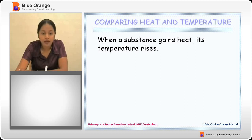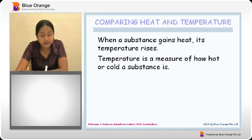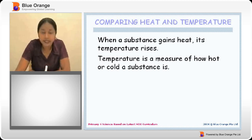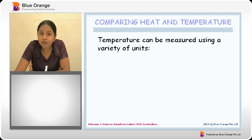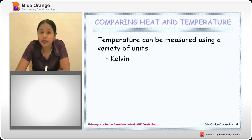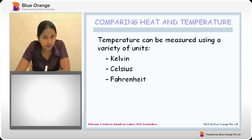When a substance is heated, as it gains heat, its temperature also rises. Temperature is a measure of how hot or cold a substance is — it does not tell us how much heat is inside the substance. You must understand this as it is very important. Temperature can be measured using a variety of units: the Kelvin scale, the Celsius scale, and the Fahrenheit scale.